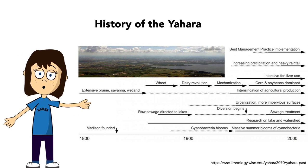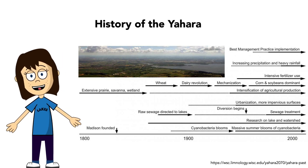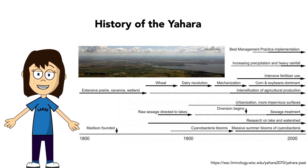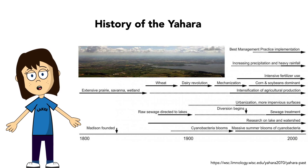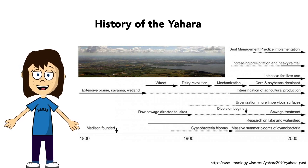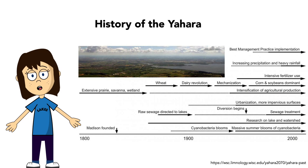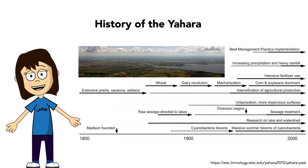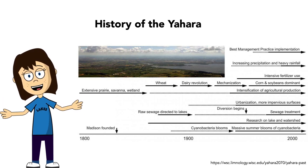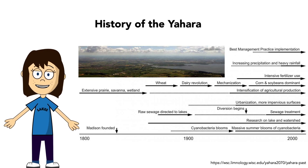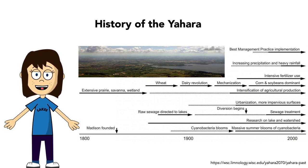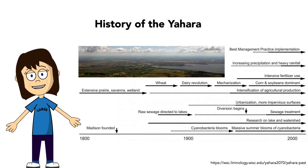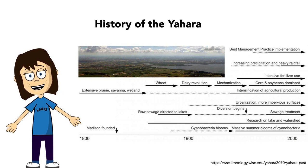The Yahara watershed's first human inhabitants likely arrived after the glaciers receded around 12,000 years ago, finding the region's soil rich and its lakes and wetlands abundant with fish and other resources. Archaeological evidence such as effigy mounds and Native American oral traditions indicate this region was the spiritual center of early cultures. The land ultimately became home to the Ho-Chunk tribe, who referred to it as Dejope, or the Four Lakes region. The Ho-Chunk managed the land through prairie burning, hunting, fishing, and agricultural practices, leaving a mark on the region's ecosystems, though to a much lesser extent than the incoming Euro-American settlers.